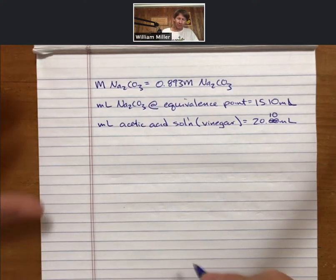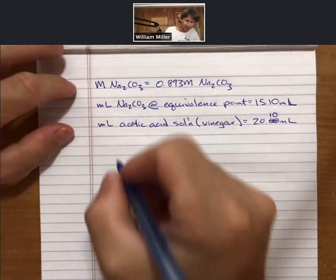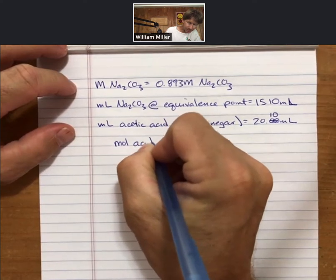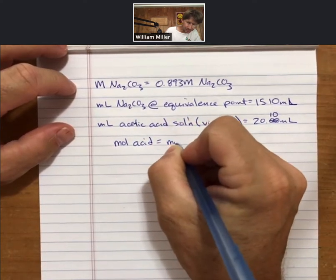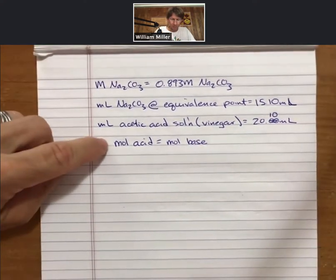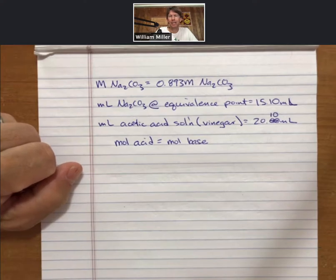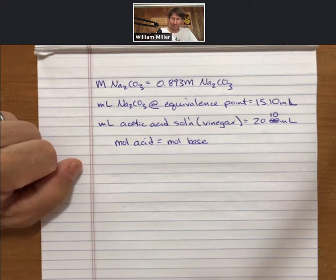Now, at the equivalence point, my moles of acid equals my moles of base. And both of these have 1s next to them that are implied, and that's because both of them have 1s next to them in the balanced chemical reaction for this process.